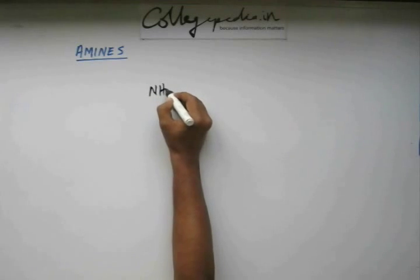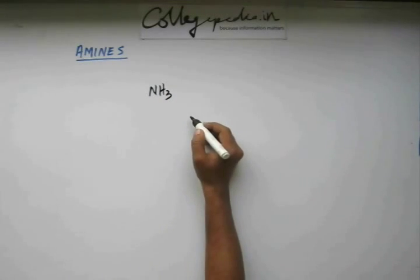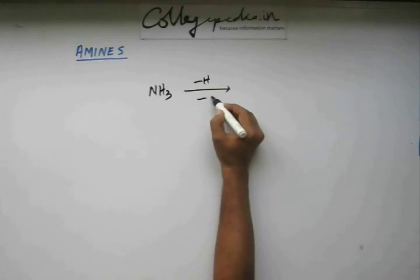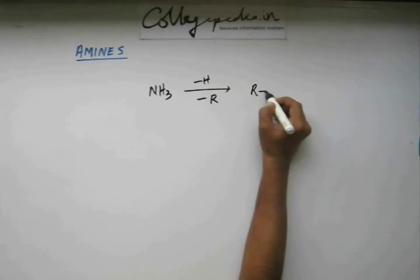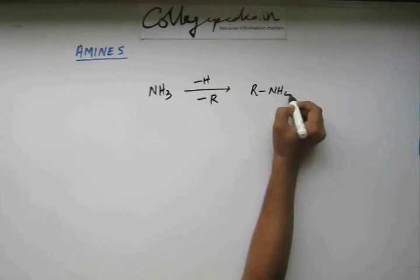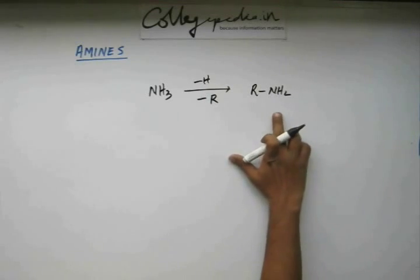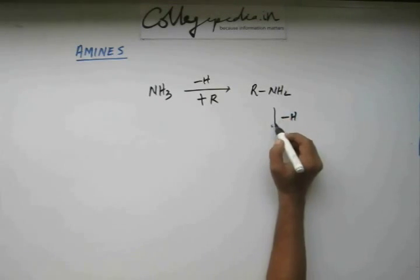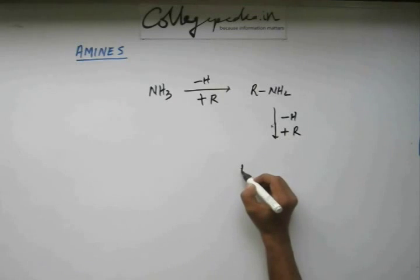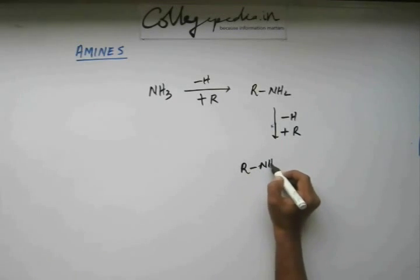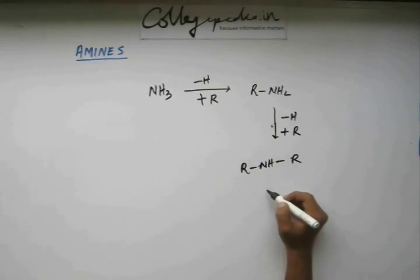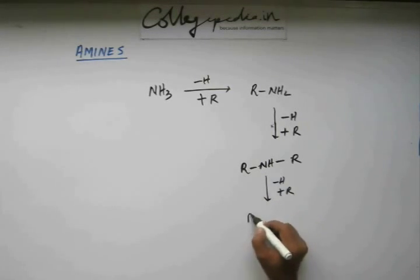Amines are derivatives of ammonia. When one hydrogen of ammonia is replaced with one R group, then we get one degree amine. If we further replace one more hydrogen and add one more R group, then it becomes a two degree amine. And if we further repeat the same step, replacing this hydrogen and adding one R group, then we get a three degree amine.